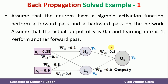This is the problem definition. Assume that the neurons have a sigmoid activation function. Perform the forward pass and backward pass on the network. Assume that the actual output is 0.5 and the learning rate is 1. Then perform another forward pass.